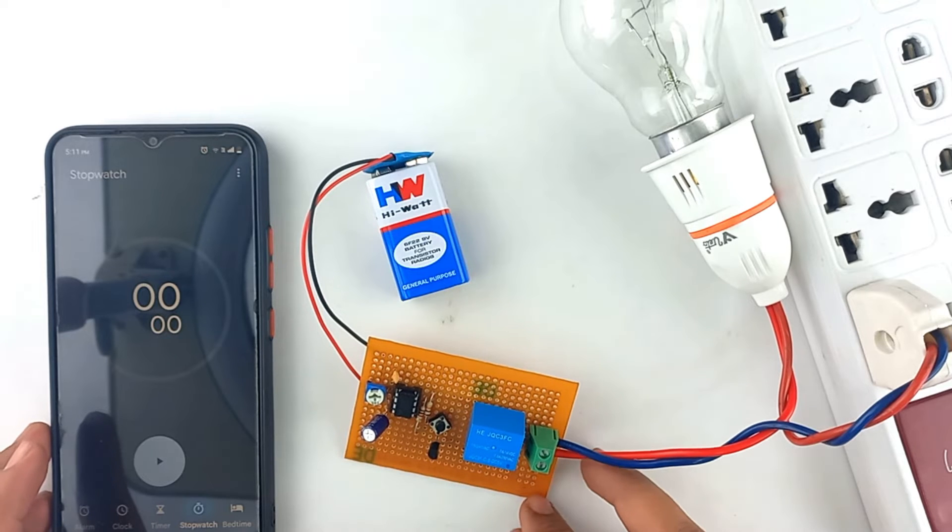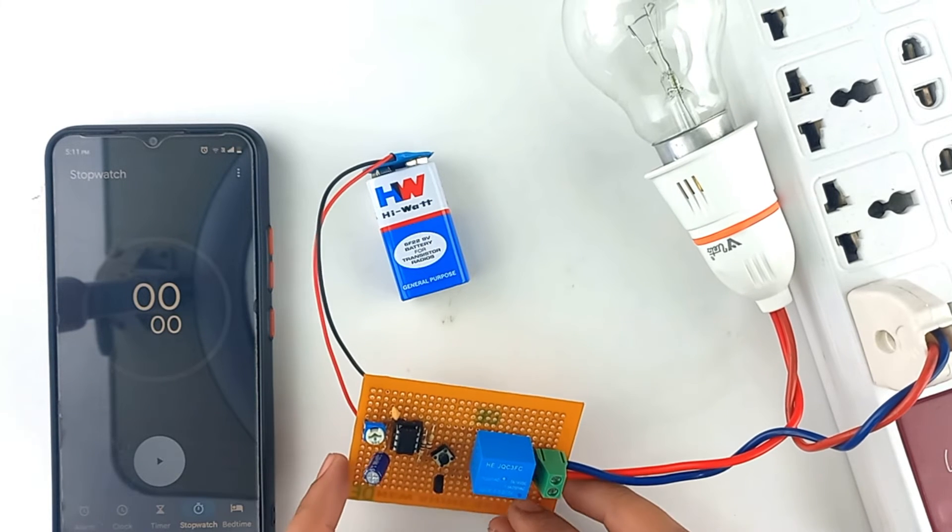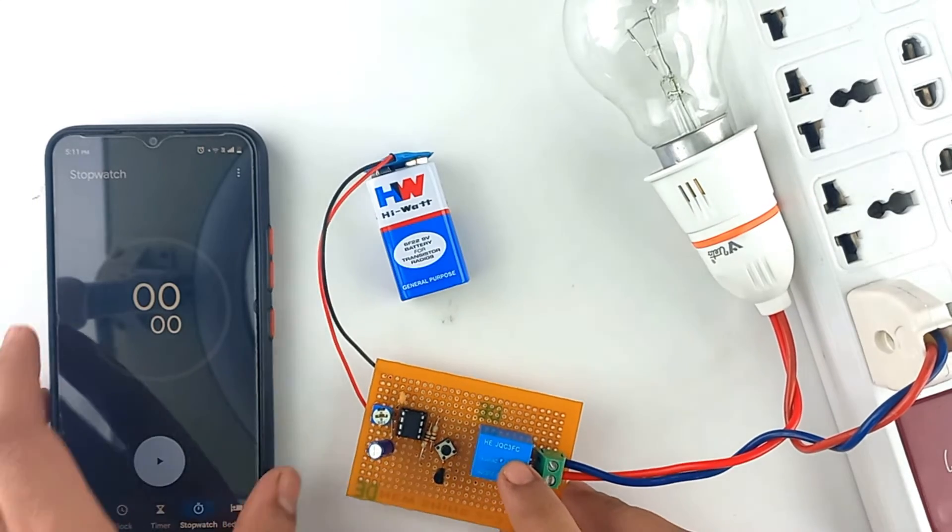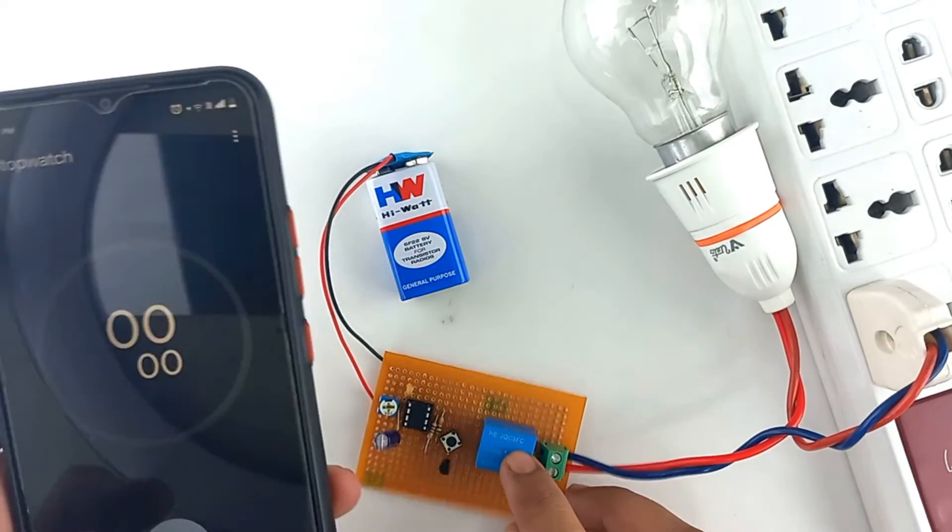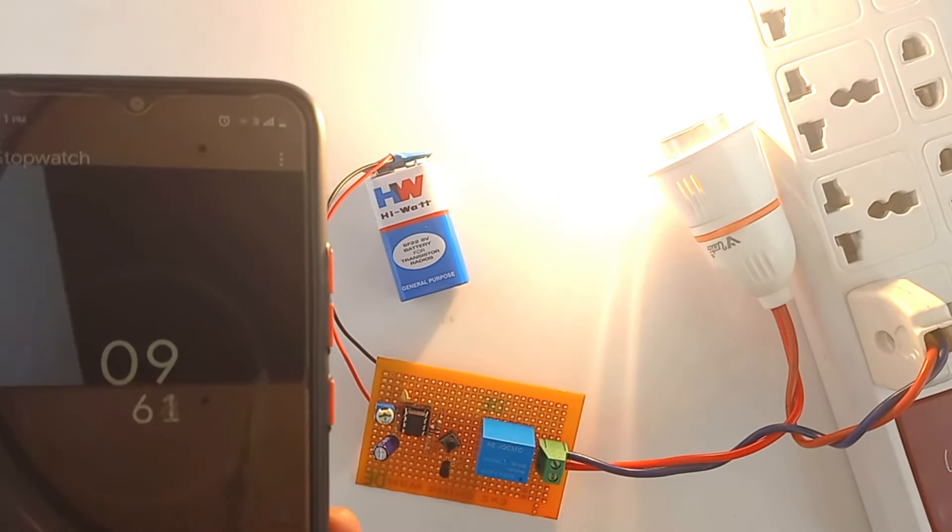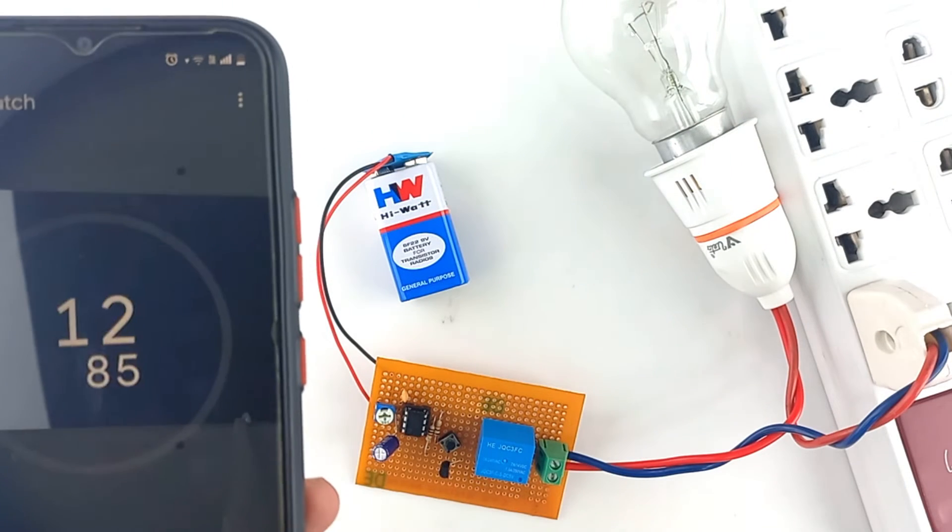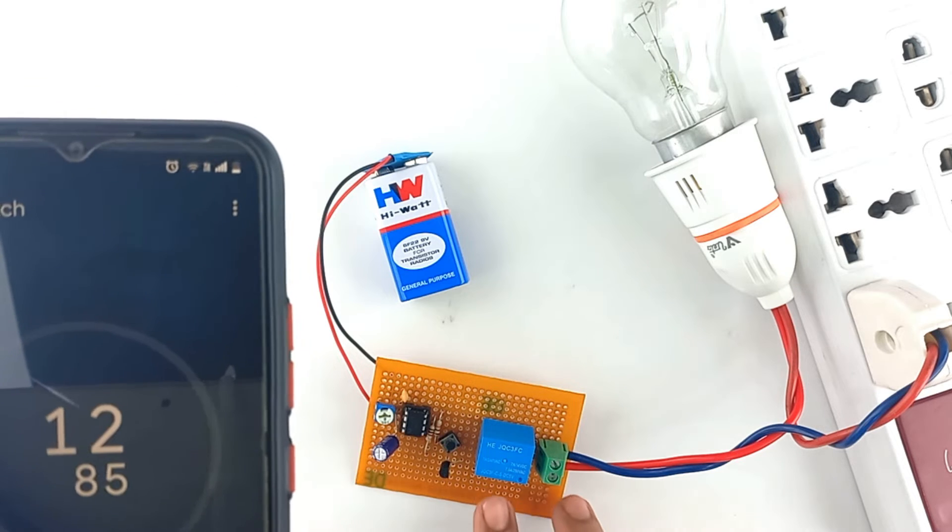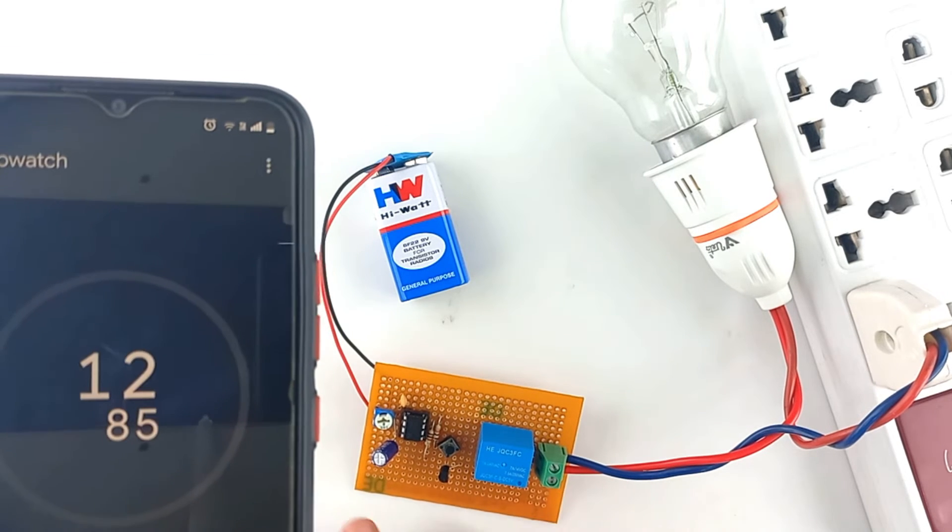I have set a time of 11 to 13 seconds in which the bulb must turn off. Now let's check. As you can see, the circuit gets automatically cut off within the time set by this potentiometer.